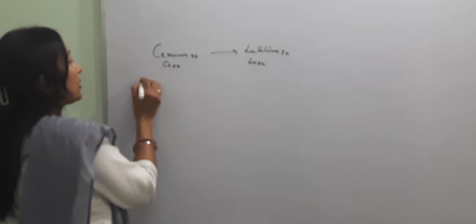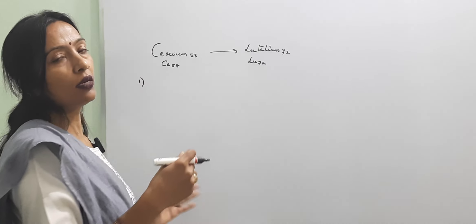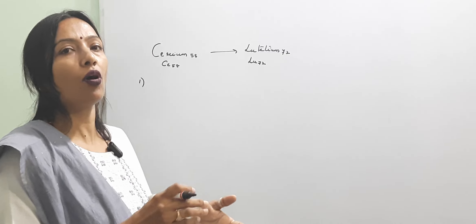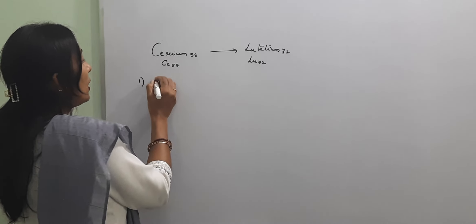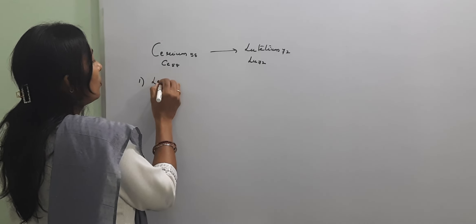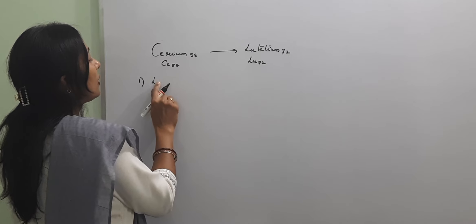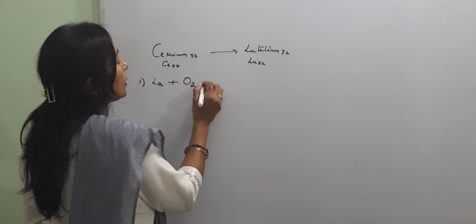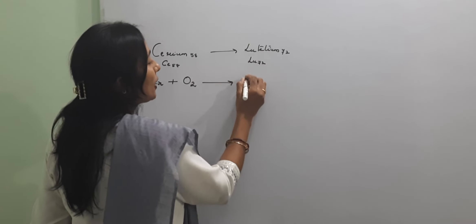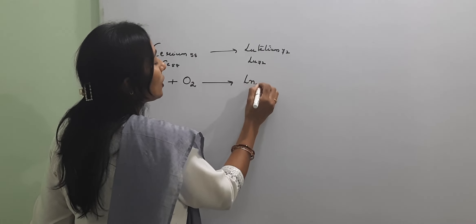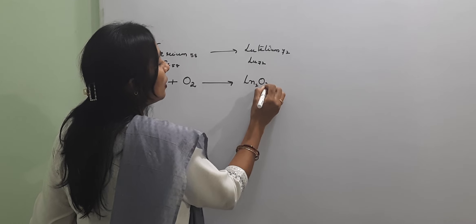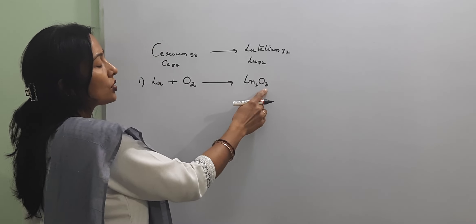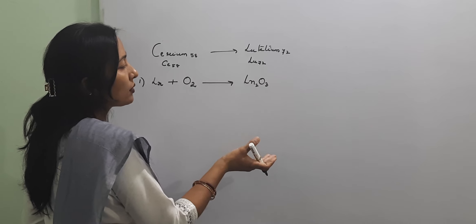When lanthanides are heated with carbon at 2773 Kelvin, they form lanthanide carbide. And when lanthanides are heated with oxygen, they give lanthanide oxide because lanthanides have a general oxidation state of plus 3. So when we burn them, we get the oxide of lanthanide.